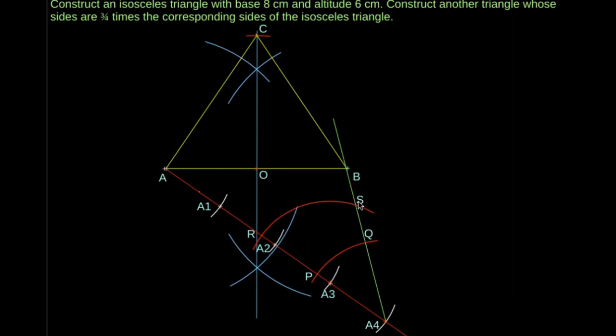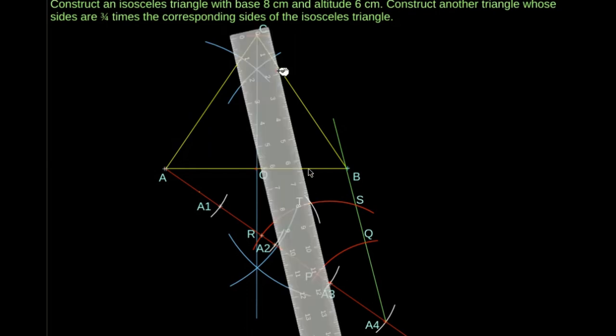Consider an angle at A3 equal to the angle at A4 as shown. Draw a line segment from A3 through B. The line segment cuts AB at D.